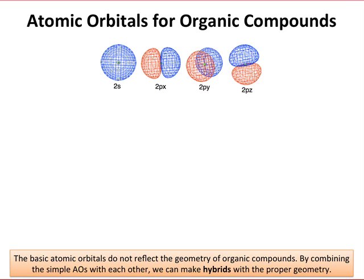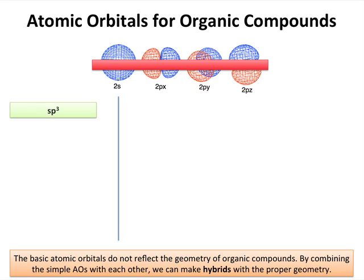What we need to do is combine these orbitals with one another to create what are called hybrids that have the proper geometry of organic molecules. So we're going to throw out the simple atomic orbitals and look now at combinations of these, for instance 1s and 3p orbitals that have the proper geometry.